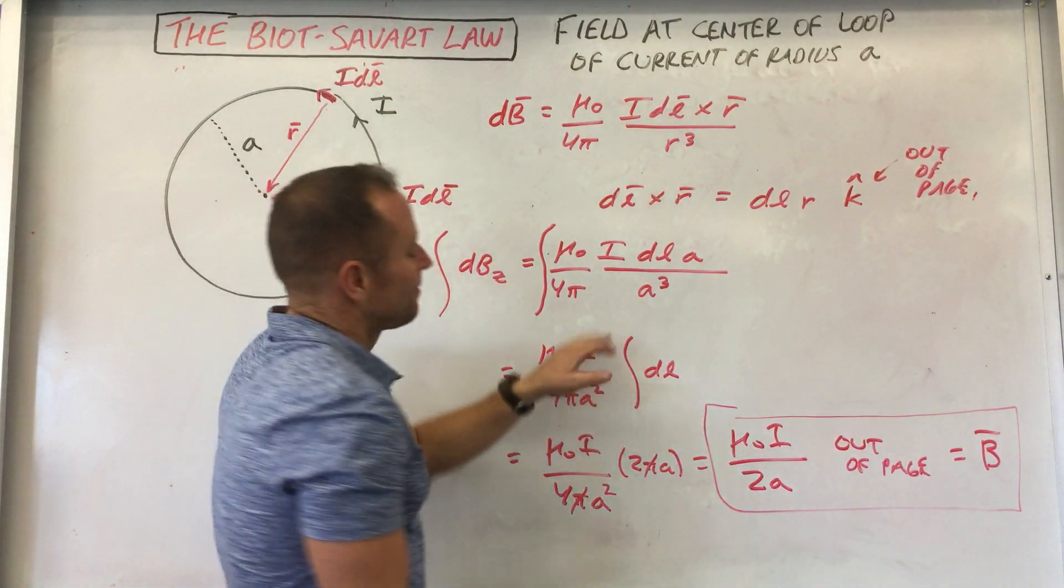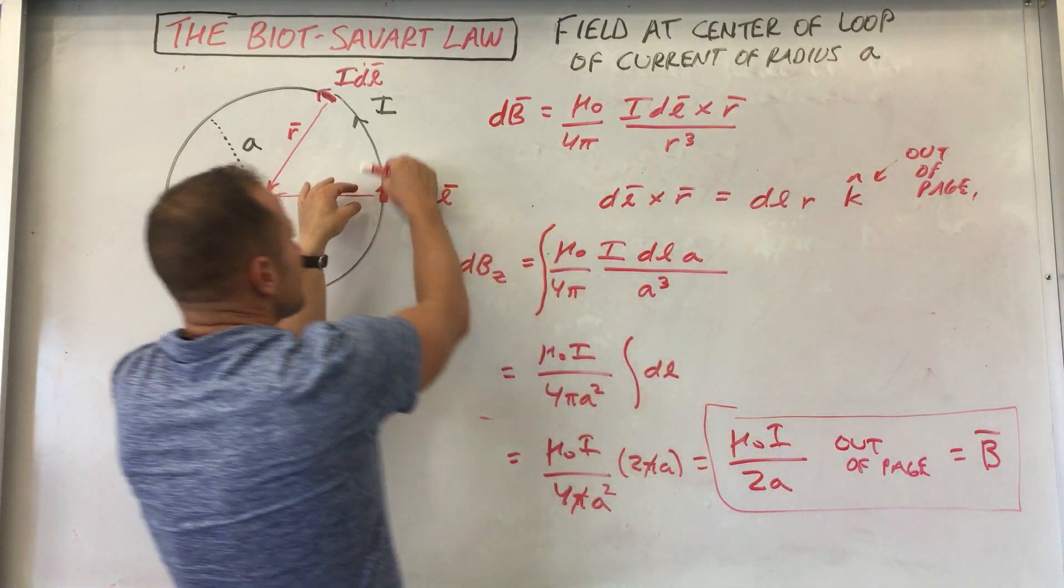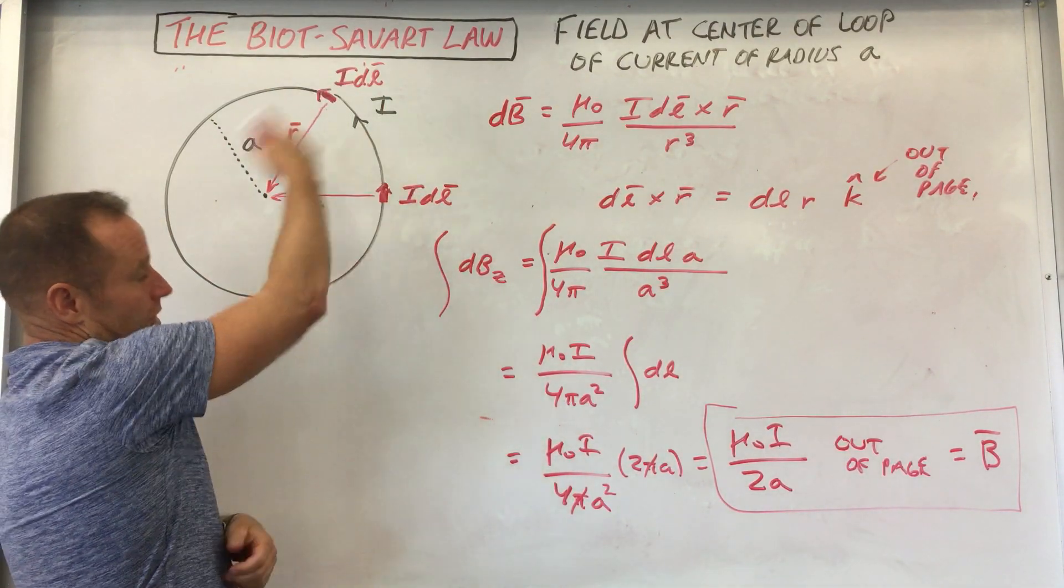This last little move here, again, it's just more powerful if you know what's happening here. This is just the sum of all the bits of length. So of course, it has to be the circumference.